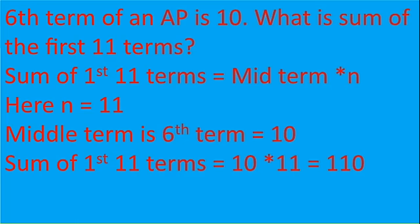Shall I repeat? Sum of the first 11 terms equal to middle term × number of terms. Here N = 11. So middle term, sixth term is 10. So 11 × 10 = 110. Is it so simple? Yes. Thanks for watching this video.